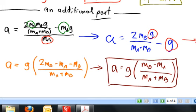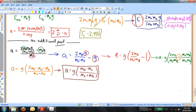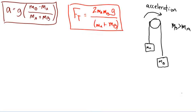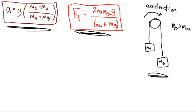I want to rewrite the tension equation beside this and redraw the diagram to make some observations. The expression for acceleration, the expression for string tension, and the diagram — and in the diagram we're assuming that mass B is greater than mass A. Let's make observations in extreme situations. Let's suppose that the mass of object A is equal to zero — in other words, object A doesn't have any mass at all.